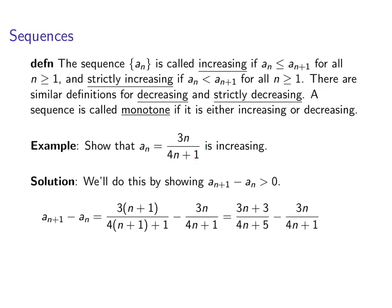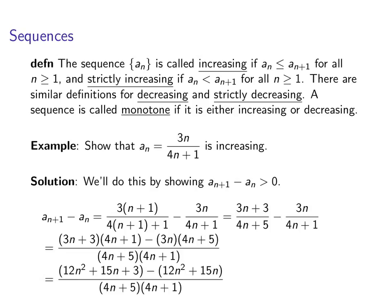Clean it up a little bit and make common denominators. And then we'll multiply everything out and simplify. All right, so all of that was just a bunch of algebra to wind up with 3 over 4n plus 5 times 4n plus 1.